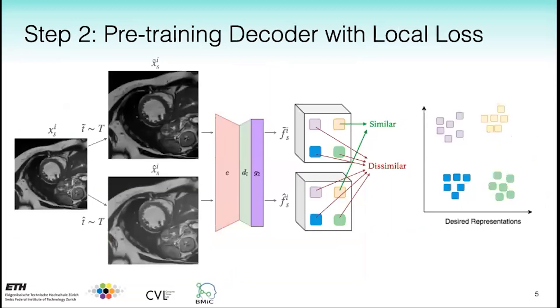Segmentation tasks can benefit from learning distinctive local level representations within an image, so we select positive and negative pairs within feature maps using domain cues.